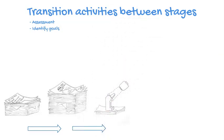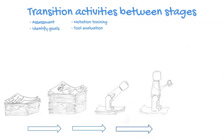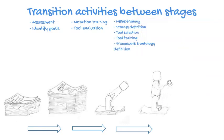Transitioning from stage 2 (document-centric) to stage 3 (model-enhanced), we want to consider things like notation training and tool evaluation — getting mechanisms in place to become more mature. Transitioning from stage 3 to stage 4 is where things really start to kick off: MBSE training, process definition, tool selection, tool training, framework and ontology definition — putting mechanisms in place to start getting the true benefits of model-based systems engineering.